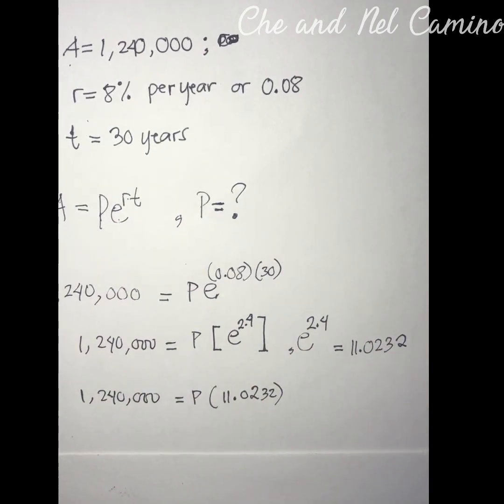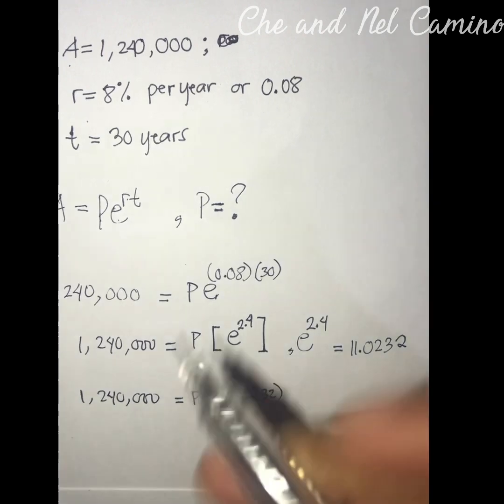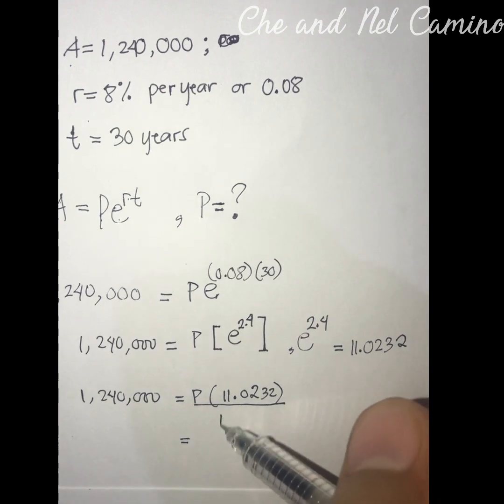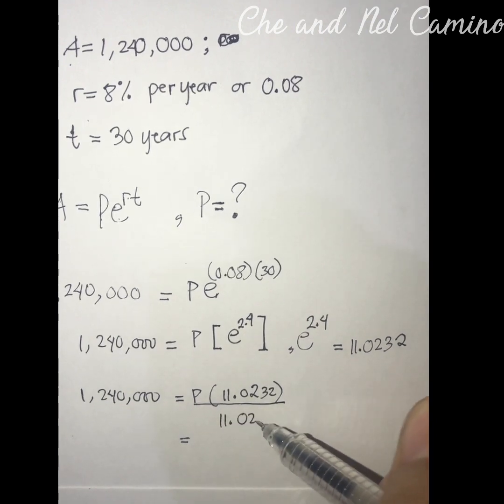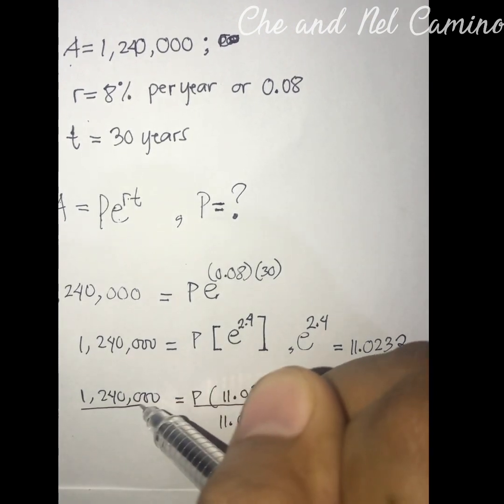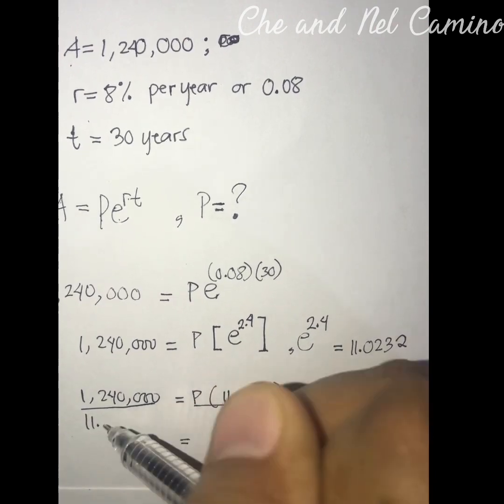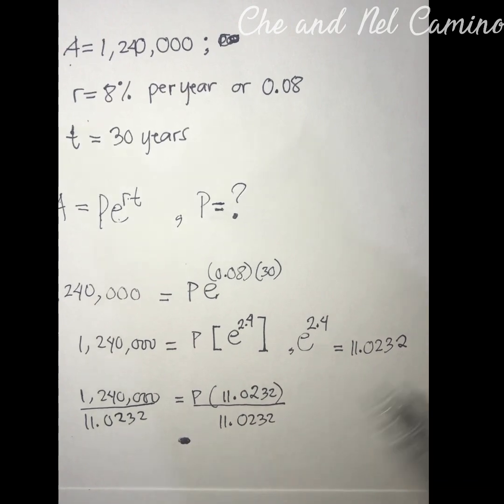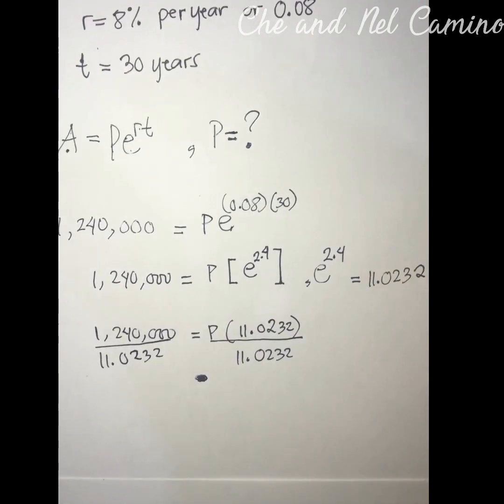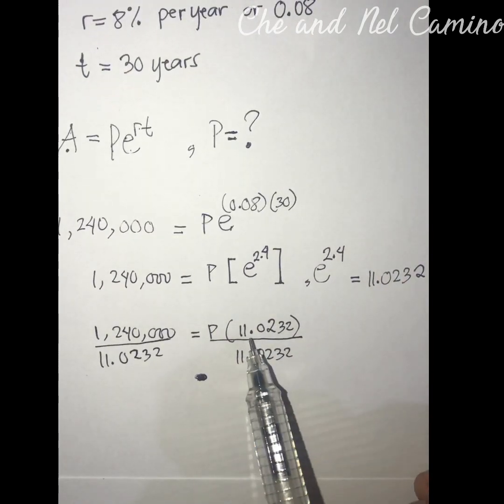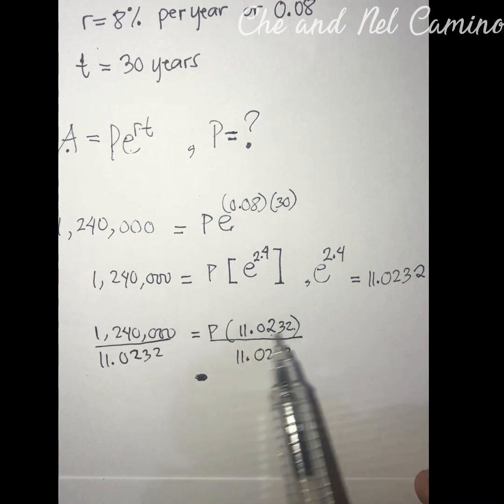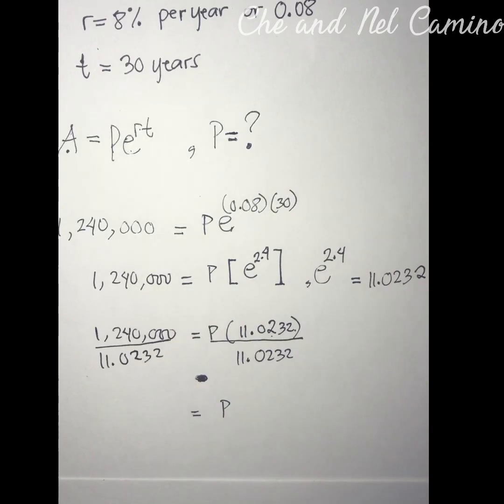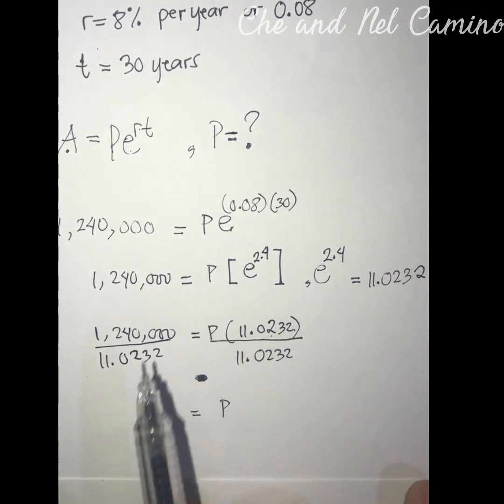So we have 1,240,000 on the left side of our equation. The next process is we simply divide both sides by 11.0232 for us to eliminate this 11.0232 in the right side so that we can have P alone.